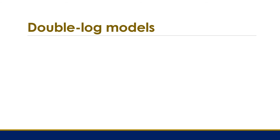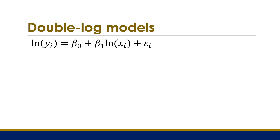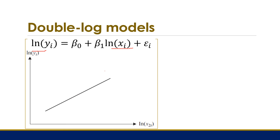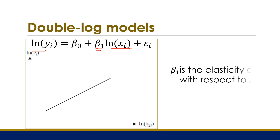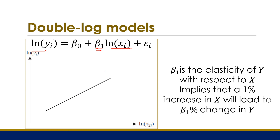Now consider the interpretation of the double log model's coefficients. For the double log model, both the response and predictor variables are in log form, so plotting log y against log x gives a straight line. Beta 1 gives the elasticity of y with respect to x, and is interpreted as: a one percent increase in x leads to beta 1 percent change in y.